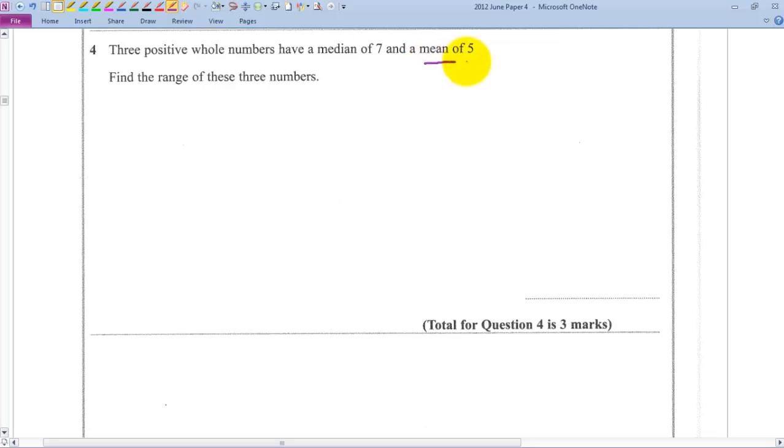The key thing to start off with is the mean of 5. We've got three positive whole numbers with a mean of 5. That means they must add up to 3 times 5. Three of these numbers average 5, so the total must equal 15.